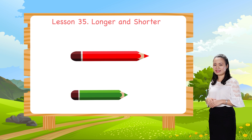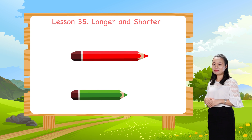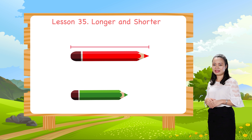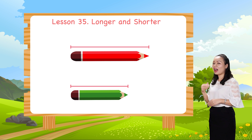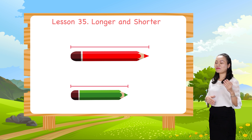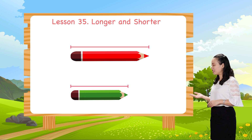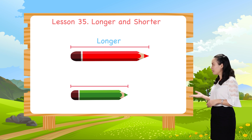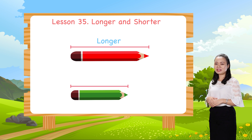Look! We have two pencils — a red and a green one. This is the length of the red one. This is the length of the green one. These lengths are not equal. So we say the red pencil is longer than the green pencil, or the green pencil is shorter than the red pencil.